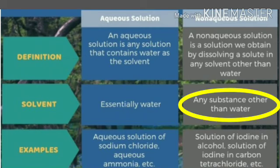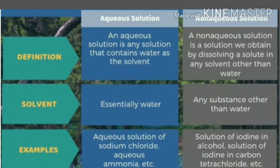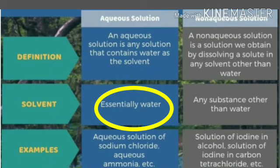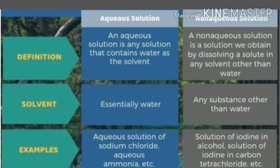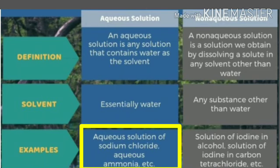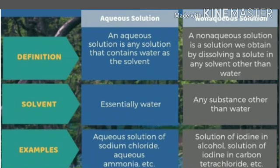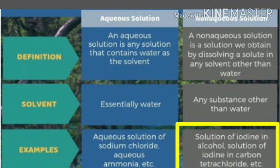If water is not the solvent and instead we use alcohol or ether, then it is called a non-aqueous solution. For example, a solution of NaCl in water is an aqueous solution, while tincture of iodine — in which iodine is dissolved in alcohol — is a non-aqueous solution.